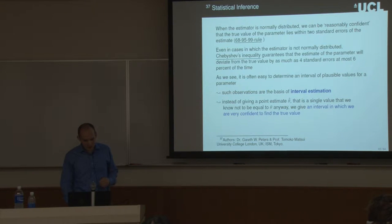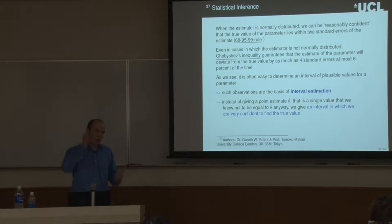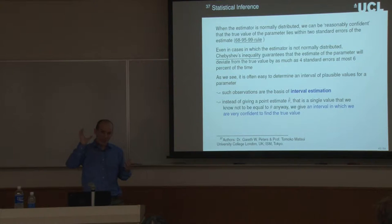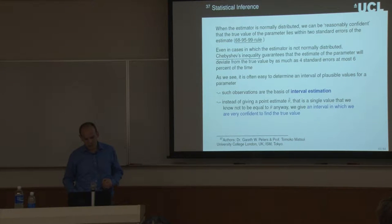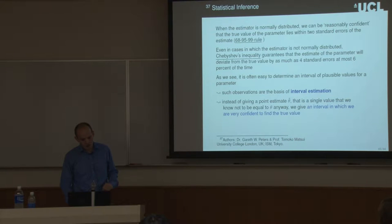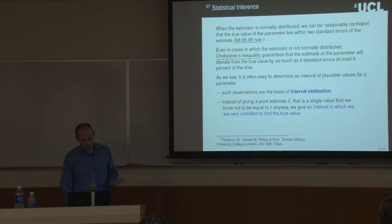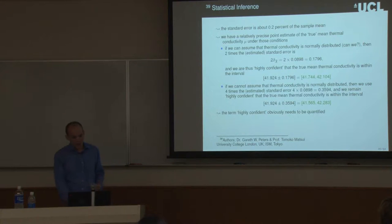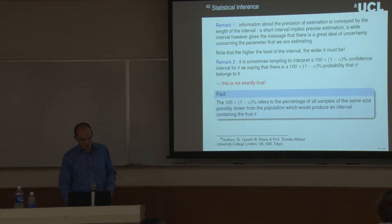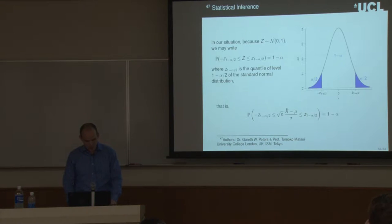Then we talked about confidence intervals, extending from just having a point estimate to having an interval where we can say with 95% confidence that the population parameter lies within. If we just have a point estimator, we don't have a solid understanding of how much we should trust the estimate, which is why we use confidence intervals. This idea extends nicely to hypothesis testing.